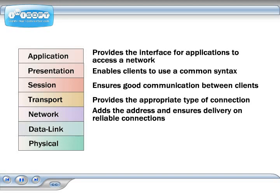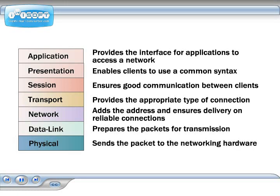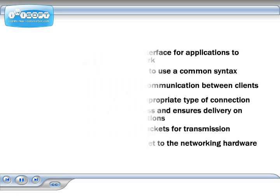At the data link layer, the packet that has been assembled at the previous layers is prepared for transmission over the networking hardware. At the physical layer, information about the networking hardware is used to send the packet out onto the network.